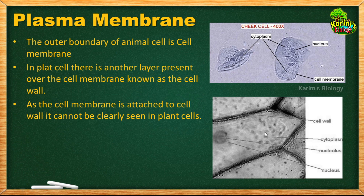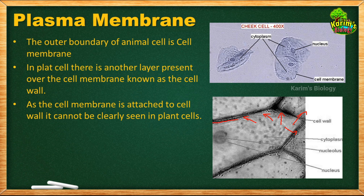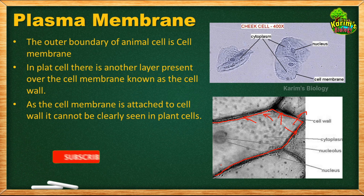Inside the cell there is cytoplasm, and the water present exerts pressure towards the outside. As a result, the cell membrane sticks to the cell wall and is not clearly visible. To observe the cell membrane you can use an electron microscope, but it is also possible to observe it under a normal compound light microscope if you think logically.